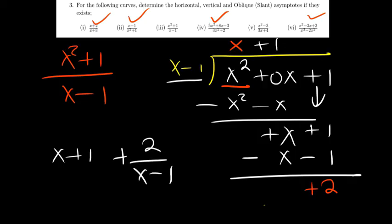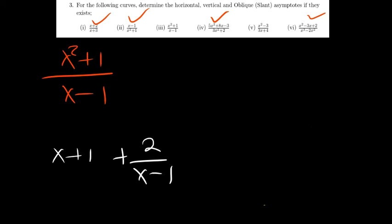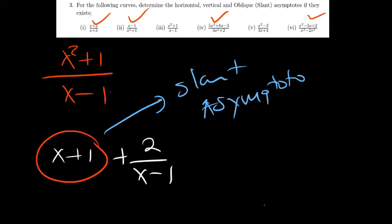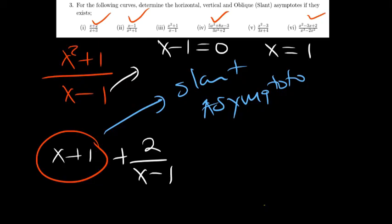So the quotient x plus 1 is the equation of the slant asymptote. That's a linear — that's a line. For the vertical asymptote, equate the denominator to 0 as usual: x minus 1 equals 0, so x equals 1 is the vertical asymptote. Simple and straightforward.